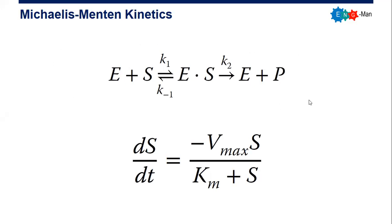Suppose we have this reaction: E is the enzyme, S is the substrate, and enzyme plus substrate react to form an enzyme-substrate complex E·S, which later separates into enzyme and product. According to Michaelis-Menten, we can model the consumption rate of the substrate with this equation: dS/dt = -Vmax · S / (Km + S).